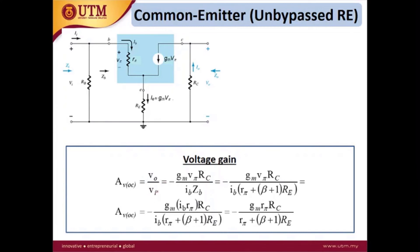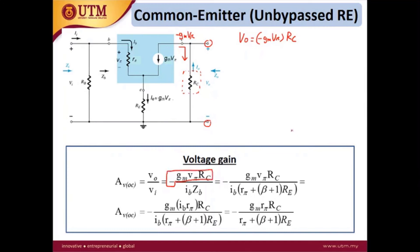Next we need to express Vout and Vi as equations. Vout is the voltage across the output point with respect to ground, equal to the voltage drop at RC. Using Ohm's law, the current through RC is -gm·Vπ, so Vout = -gm·Vπ·RC.